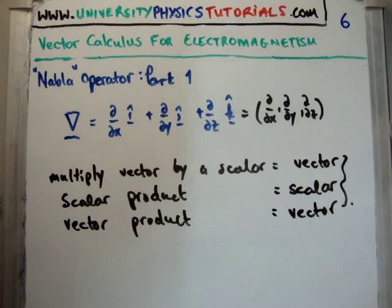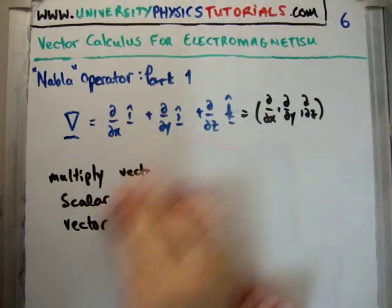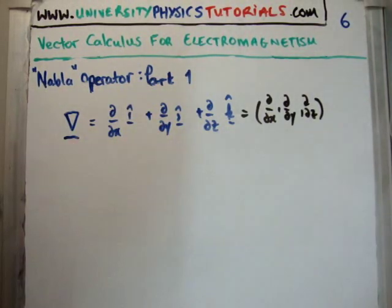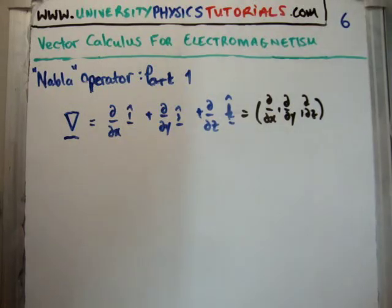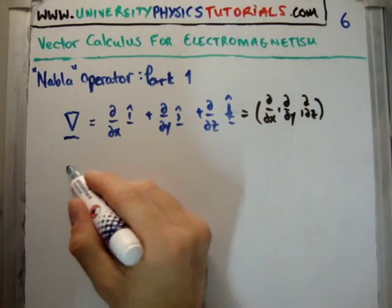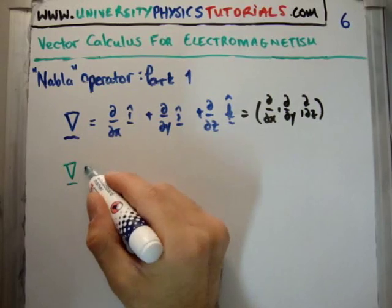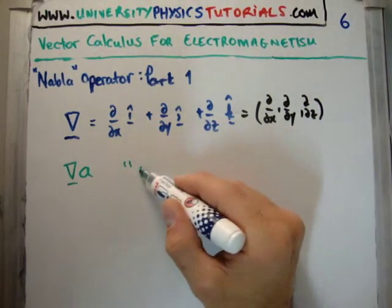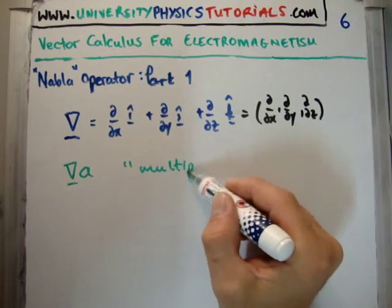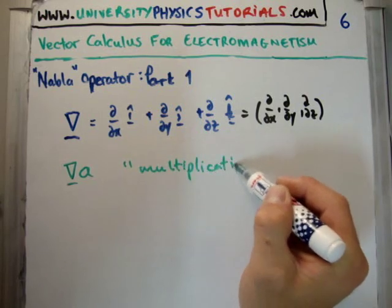So we want to draw the analogy here between taking the multiplying, taking the scalar and taking the vector product with our normal operator. So let's say we have a function f, or let's say we have a scalar a, and I just operate on our function a. So that's equivalent to our multiplication. And I'm going to talk about this actually in the next video. I'm going to call it the gradient.